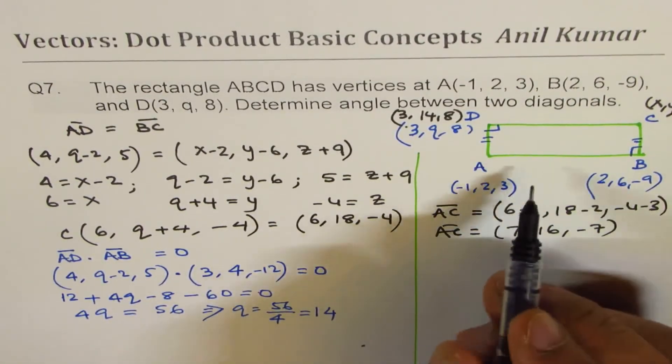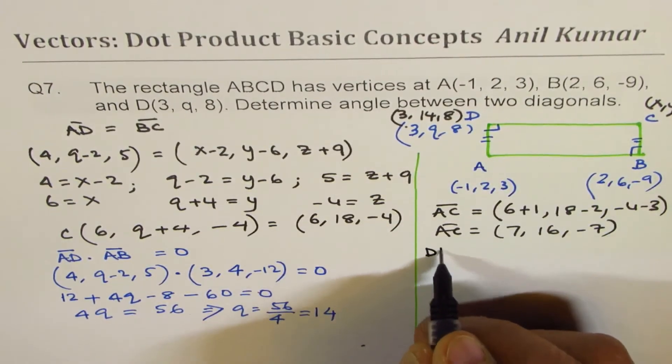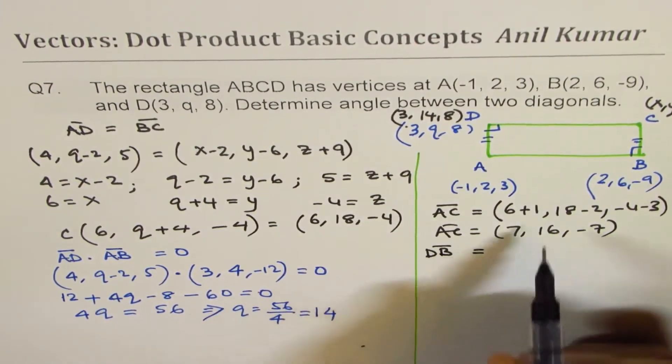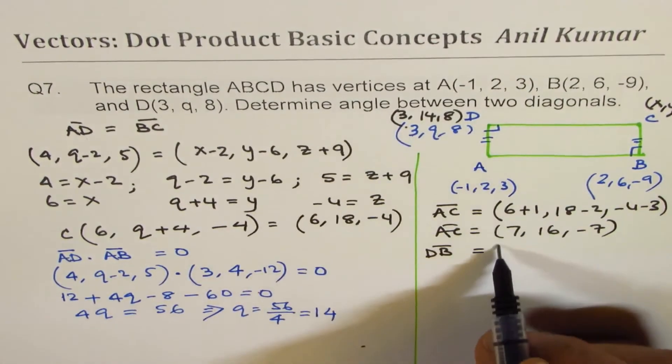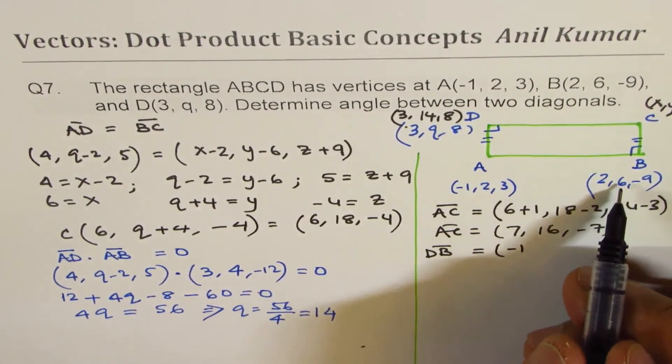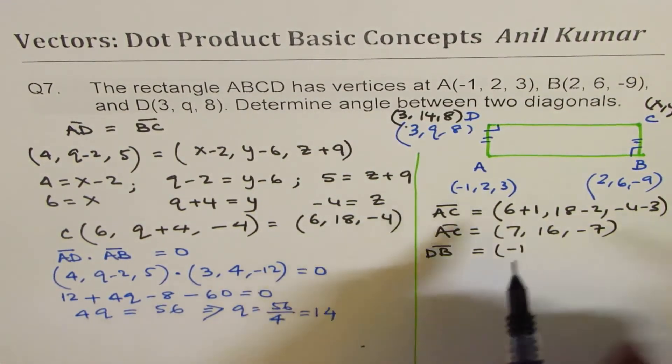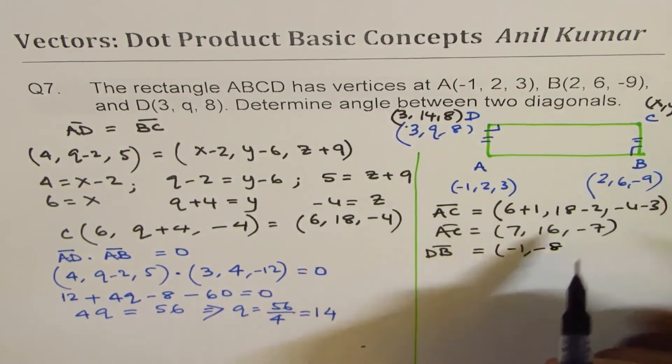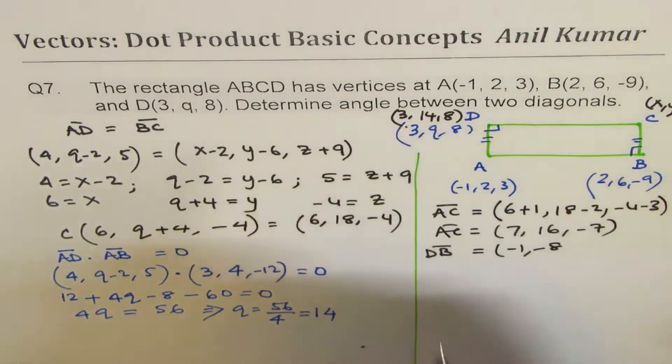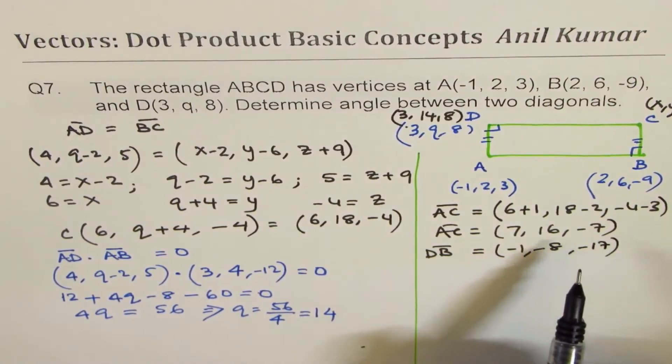Let's find what BD is. We can write DB. DB is 2-3 = -1, 6-14 = -8, and -9-8 = -17. So that becomes DB.